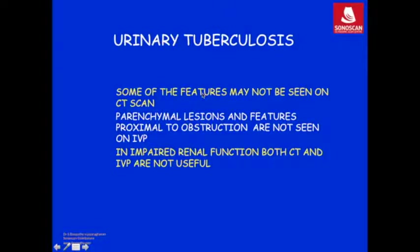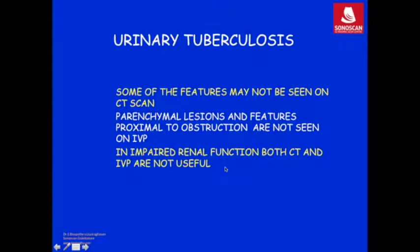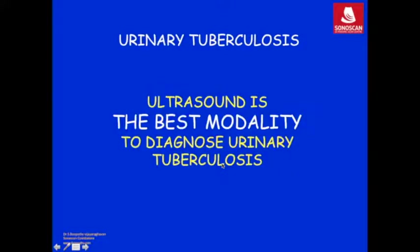Some features described may not be seen on CT scan. Parenchymal lesions and features proximal to obstruction are not seen on IVP because of poor function. When there is impaired renal function, both CT scan and IVP are not useful as contrast will not be secreted and may be contraindicated. As a result, ultrasound is the best modality to diagnose urinary tuberculosis.